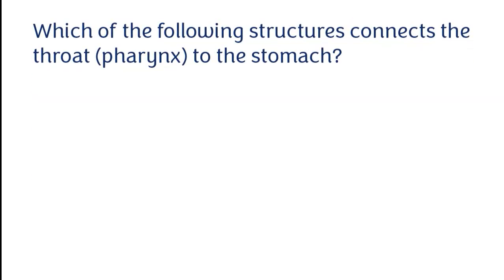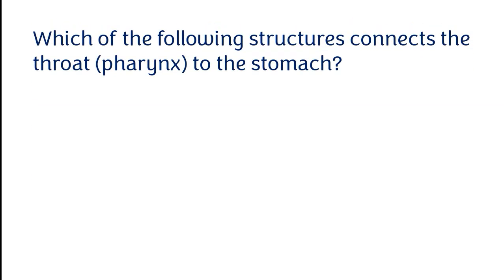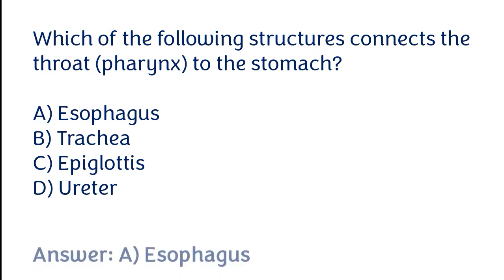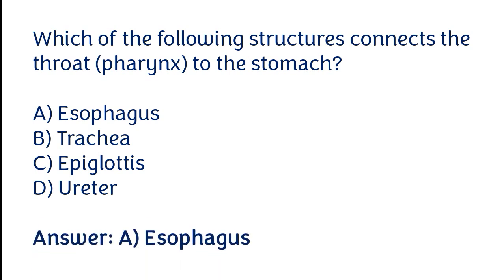Which of the following structures connects the throat to the stomach? Esophagus, trachea, epiglottis, or ureter. The correct answer is option A — the esophagus is the structure that connects the throat to the stomach.